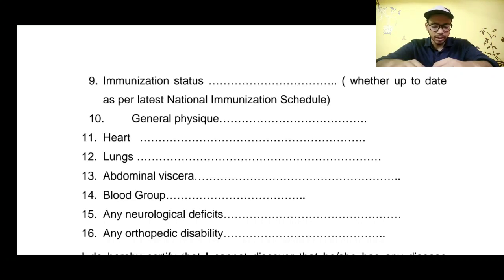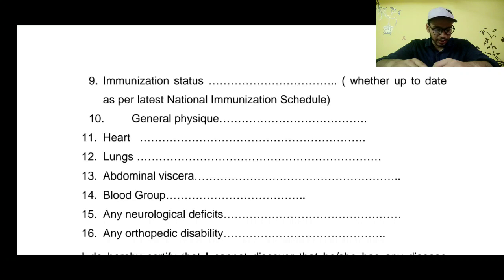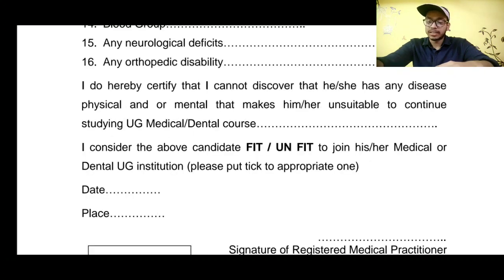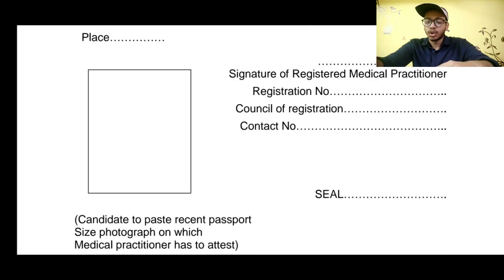You also need to check whether there are any abnormalities in your heart, lungs, or abdominal viscera. Then note your blood group, any neurological deficits, and any orthopedic disabilities. The doctor will fill in these sections, and you can see the photo section on the form as well.